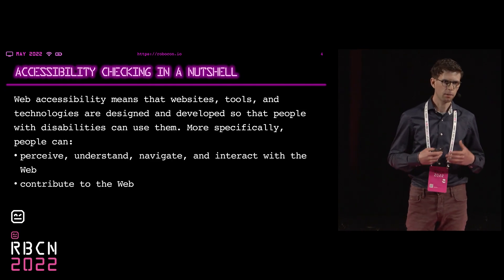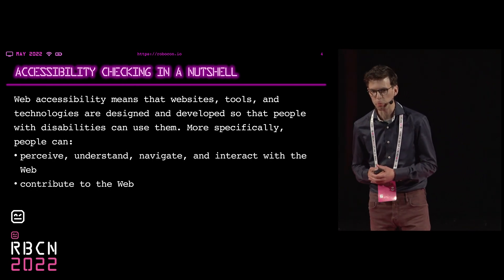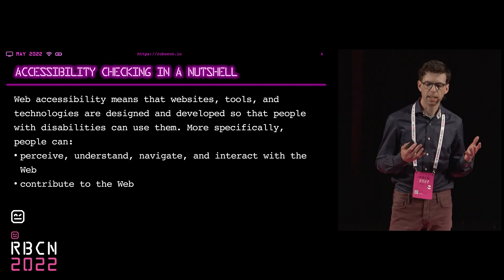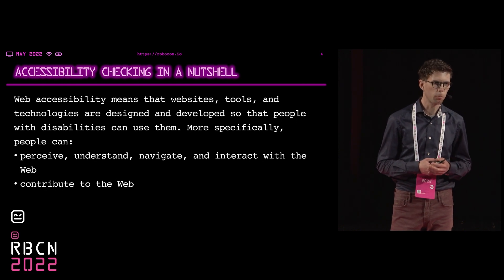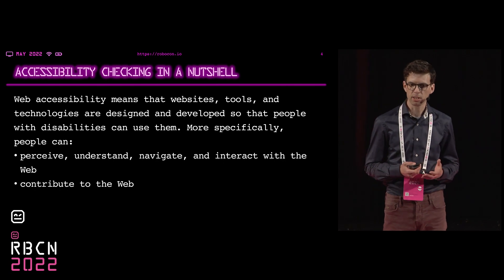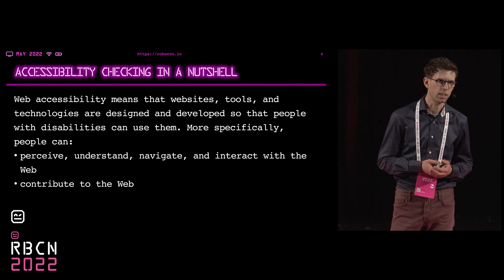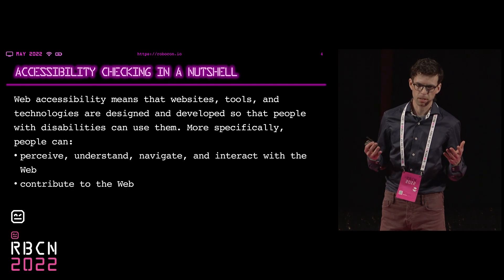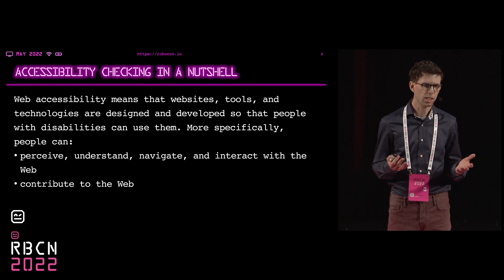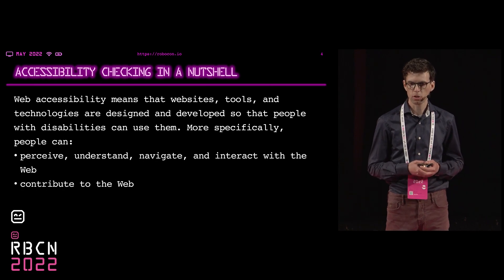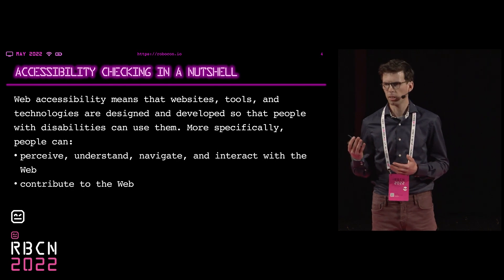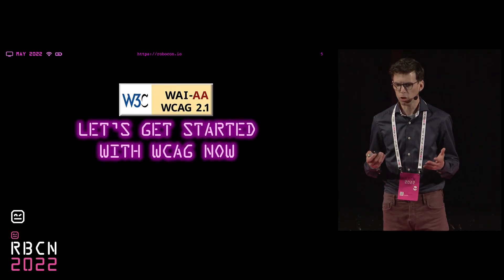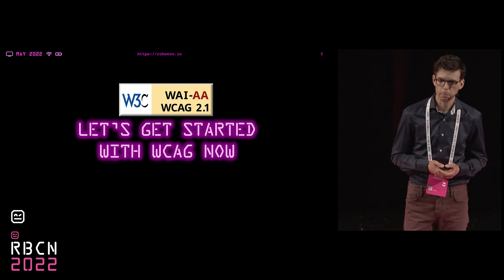I know a little bit about web content accessibility guidelines and I'm hoping to transfer my knowledge to you and to make web accessibility checking more accessible to you. So what is accessibility checking actually in a nutshell? It's estimated that over a quarter of the population have some sort of disability and web accessibility is about making the web accessible for everyone. The web is a necessity for everyone, so it's important that using the web is perceivable, understandable and easy to navigate.